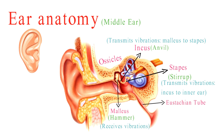The Eustachian tube connects the middle ear to the back of the throat. It plays a crucial role in equalizing air pressure on both sides of the eardrum, which helps prevent discomfort and maintain proper hearing function.